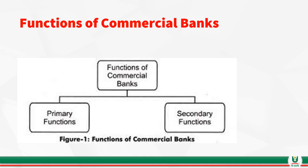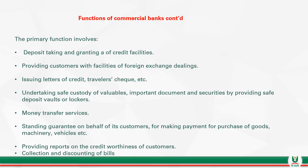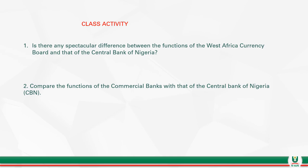The functions of commercial banks are subdivided into primary and secondary functions. They include deposit taking and granting of credit facilities, providing customers with facilities for foreign exchange dealings, issuing letters of credit, undertaking safe custody of valuables, money transfer services, and standing as guarantee on behalf of customers. Having looked at central banking activity, commercial banking activity, and what led to the failure of the West African Currency Board, we now engage in a class activity.